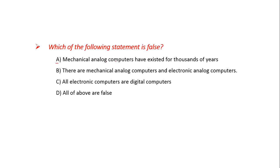Which of the following statement is False? Option A: Mechanical Analog Computers have existed for thousands of years — this is correct. Option B: There are Mechanical Analog Computers and Electronic Analog Computers — this is also correct. Option C: All Electronic Computers are Digital Computers — this is false. So the answer is C, because we were asked for the False statement.